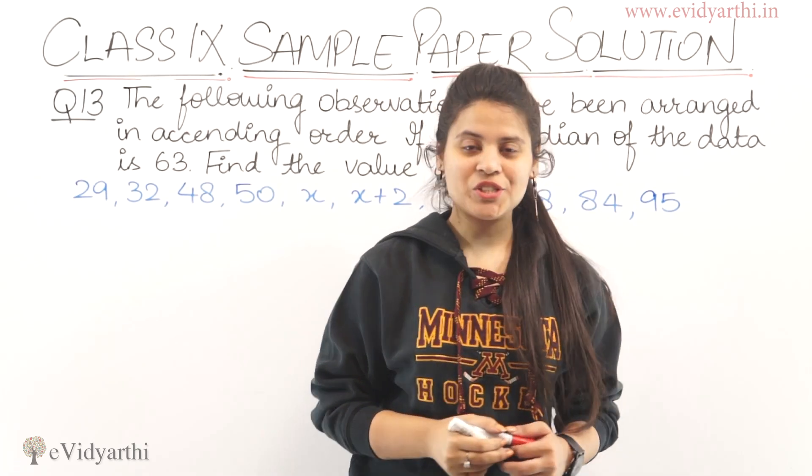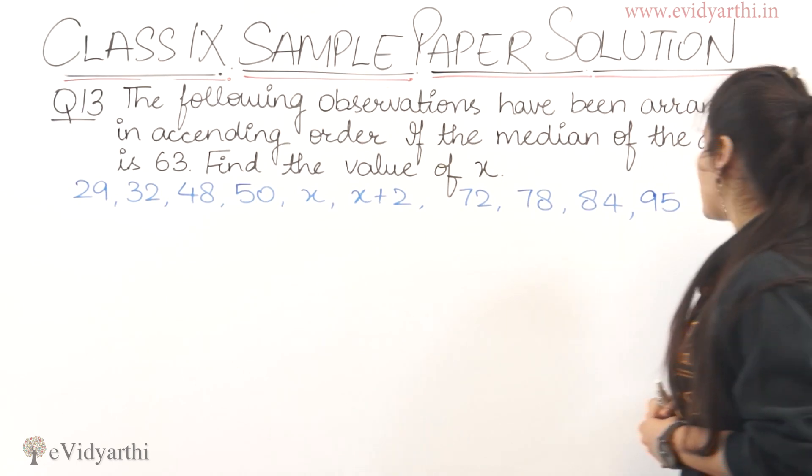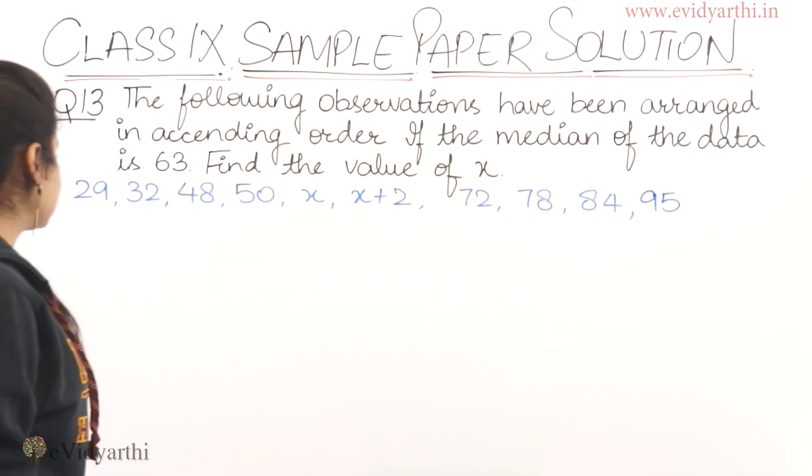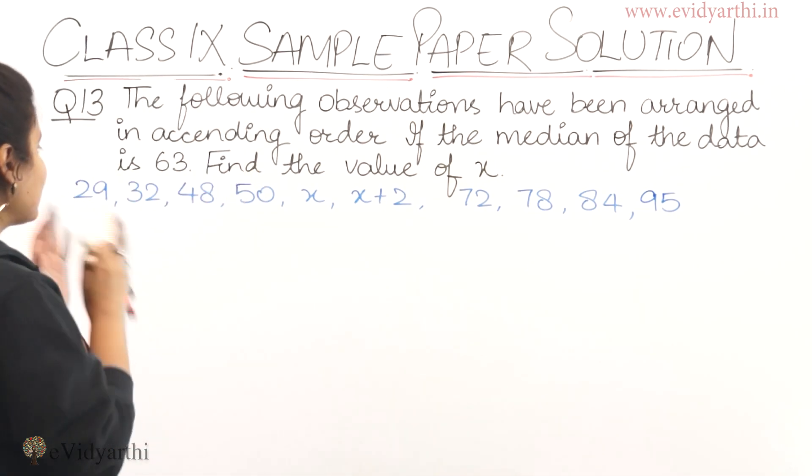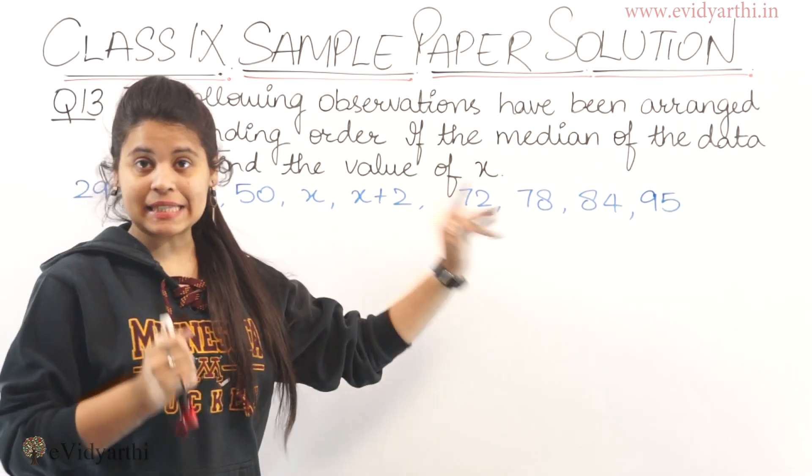Now coming to the next question which is question number 13. The question says the following observations have been arranged in ascending order. If the median of the data is 63, find the value of x. So here we have data in ascending order.